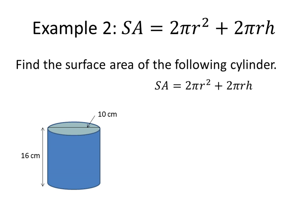So let's look at this example. Let's find the surface area of the following cylinder. This time, instead of giving you the radius, I gave you the diameter of the circle. So in order to find the radius, the diameter is equal to 2 times the radius. So to find the radius, you do that diameter divided by 2.